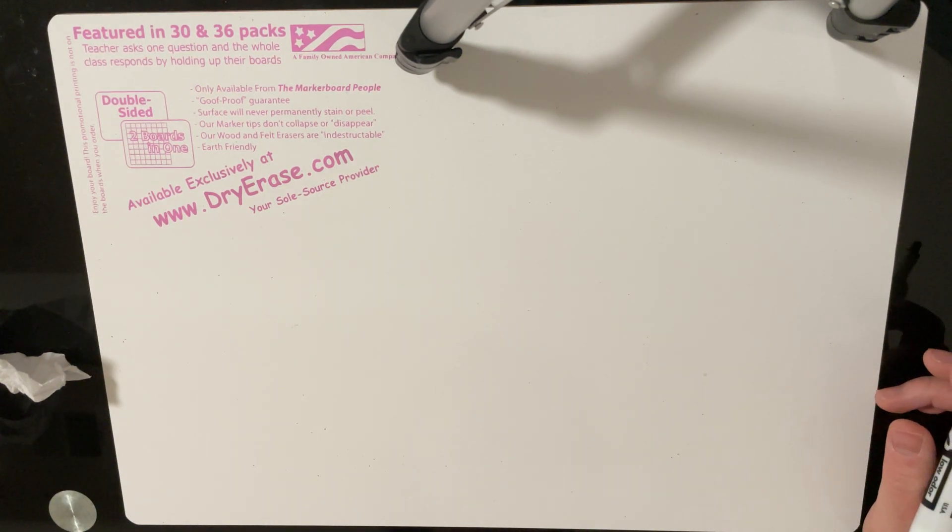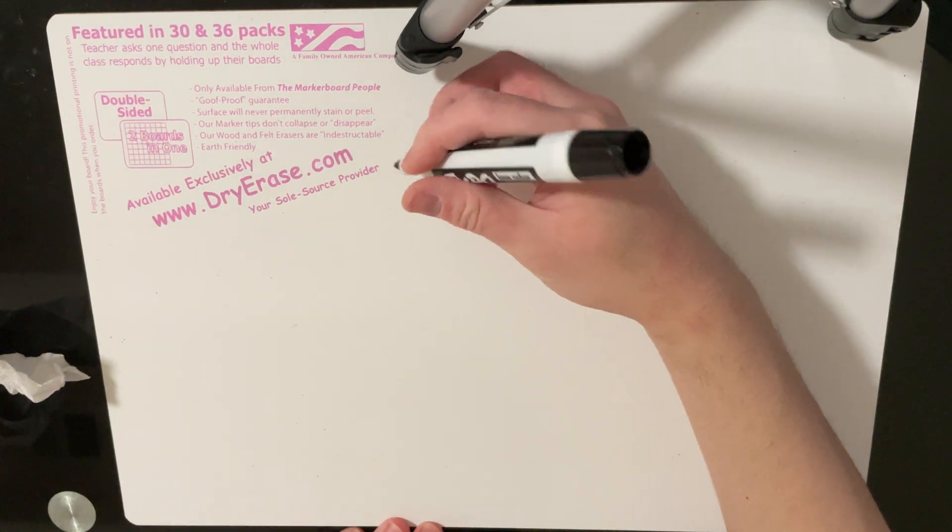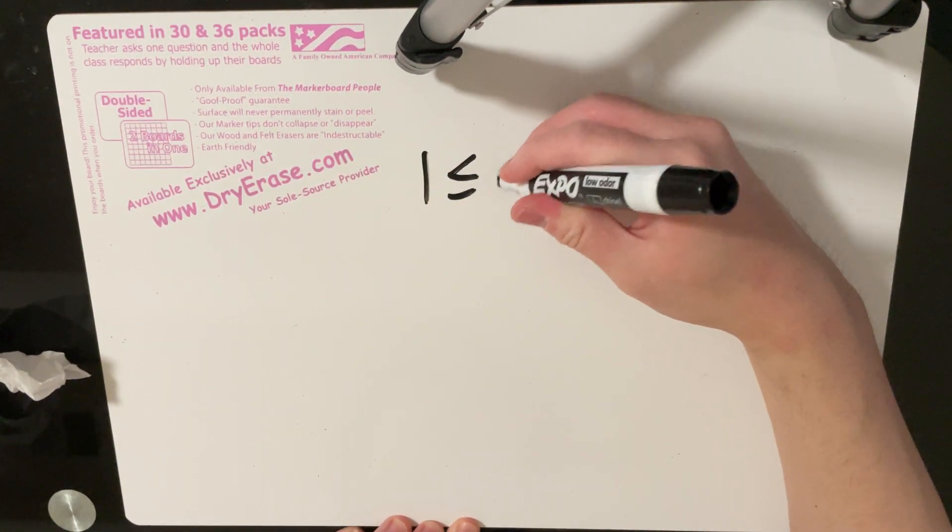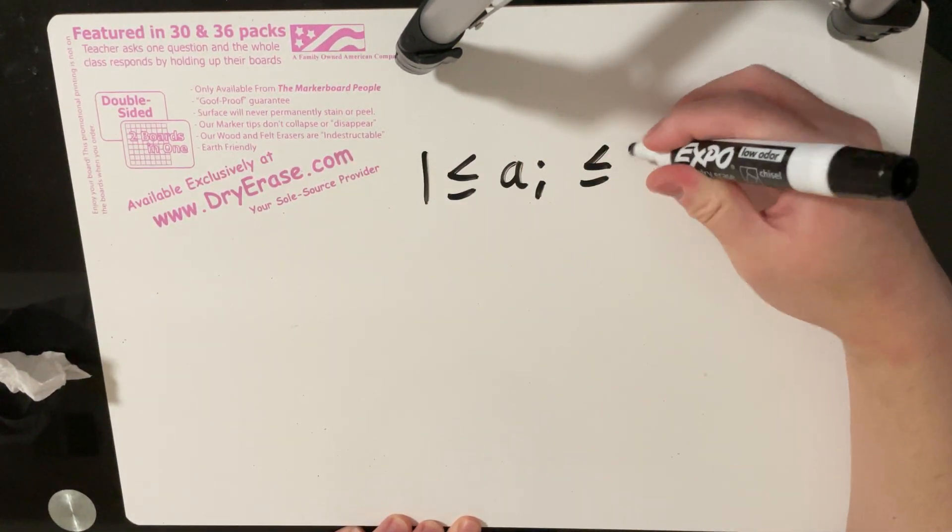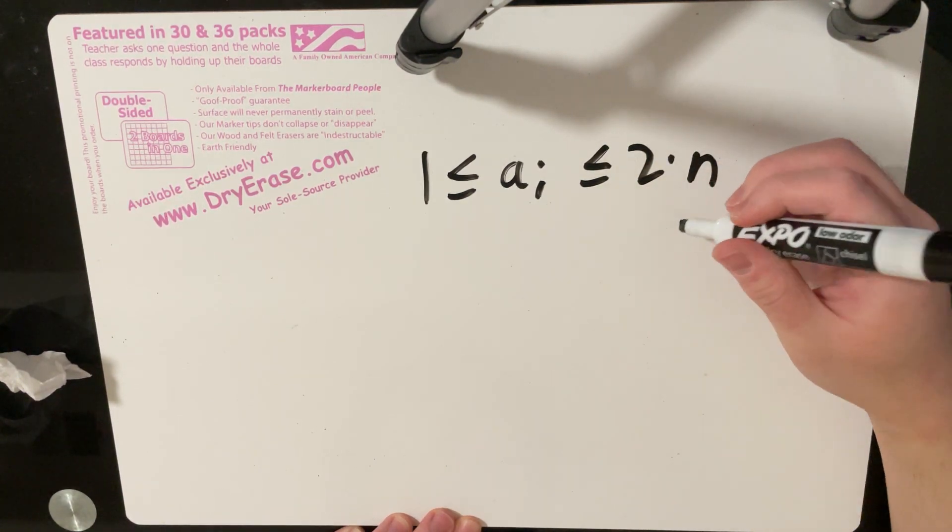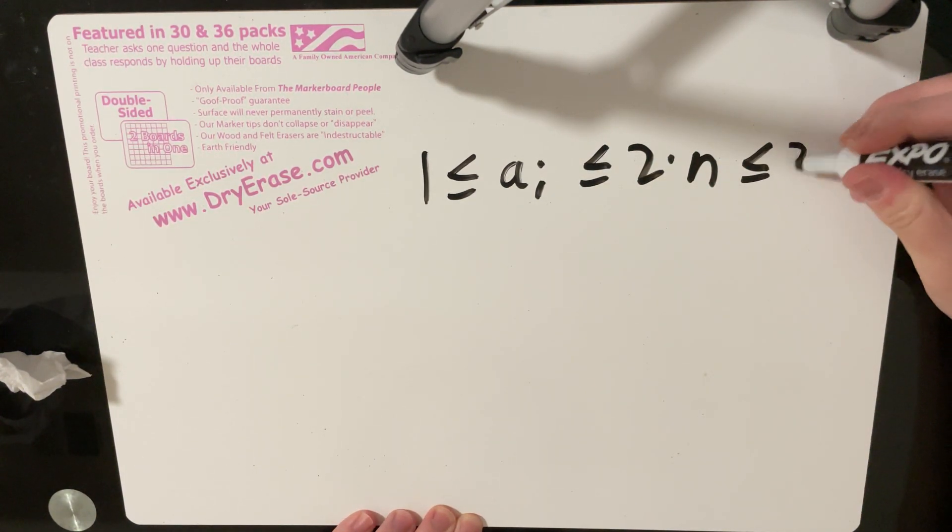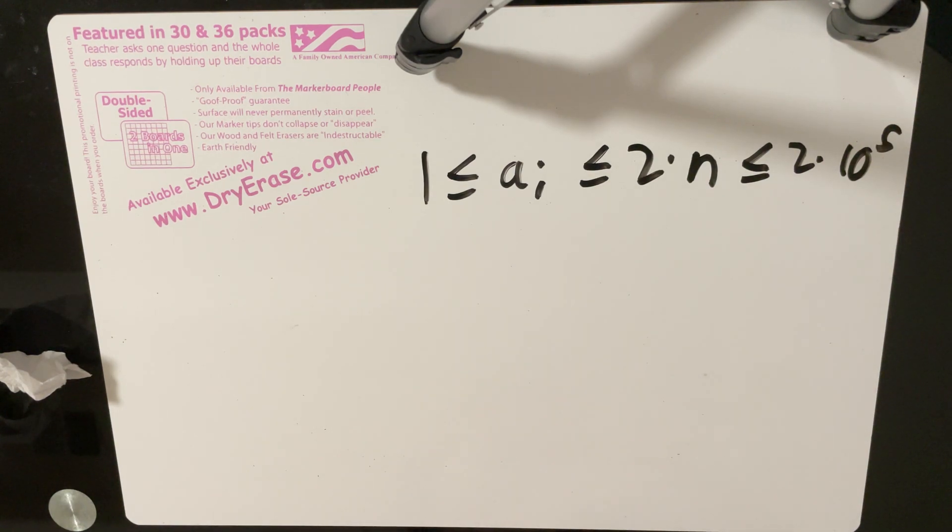And the second thing you want to notice about this array is that the values are never too large in the sense that 1 is less than or equal to ai which is less than or equal to 2 times n. And 2 times n is at most 2 times 10 to the 5 because n is at most 10 to the 5.